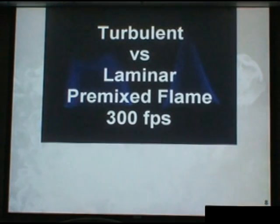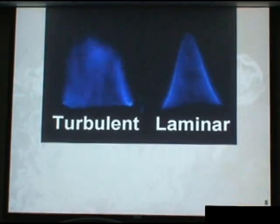So this is an example of turbulent burning velocity versus a turbulent flame versus a laminar flame, where we can see the laminar flame is very constant over time. This is taken at 300 frames per second so that you can see a little bit of the movement. This is about 15 times slower than real time.